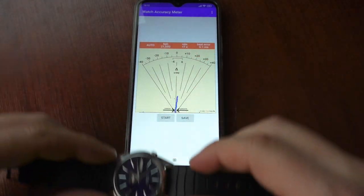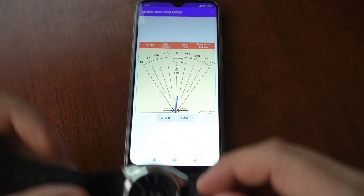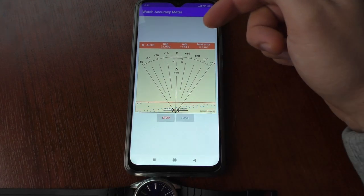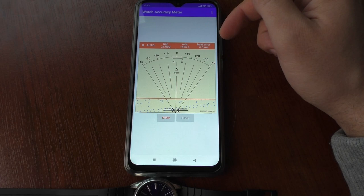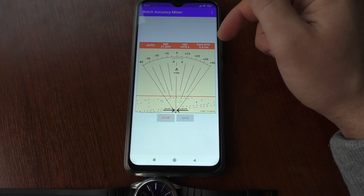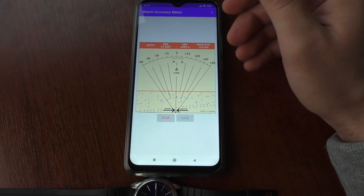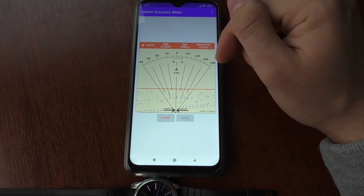Now let's put the Seiko 5 next to the microphone and see what readings we're gonna get. Plus 474 seconds, beat error 4 milliseconds. It's probably not only magnetized but it also needs servicing. Anyway, first of all let's try to demagnetize the watch.